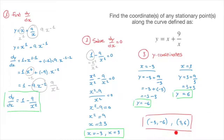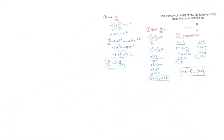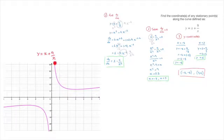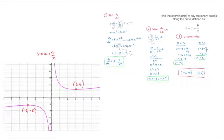To verify these results, let's look at the curve y equals x plus 9 over x. The curve comes in two separate branches. The branch on the left-hand side increases, reaches a maximum point, then decreases. The branch on the right-hand side decreases, reaches a minimum, then increases. The left branch has a maximum point at coordinates negative 3, negative 6, and the right branch has a minimum point at coordinates 3, 6 — confirming the results we found. That's it for this tutorial.